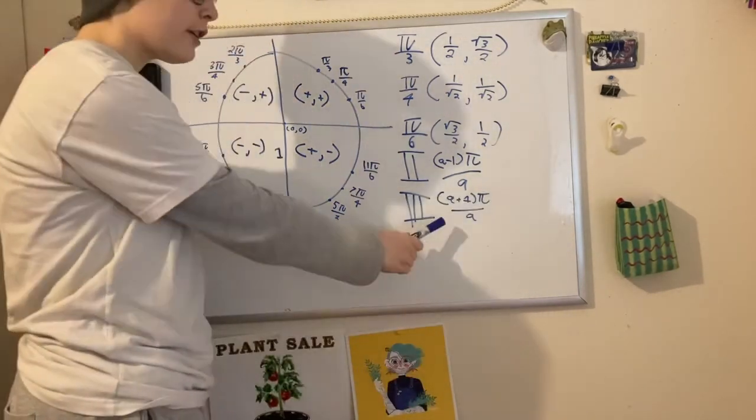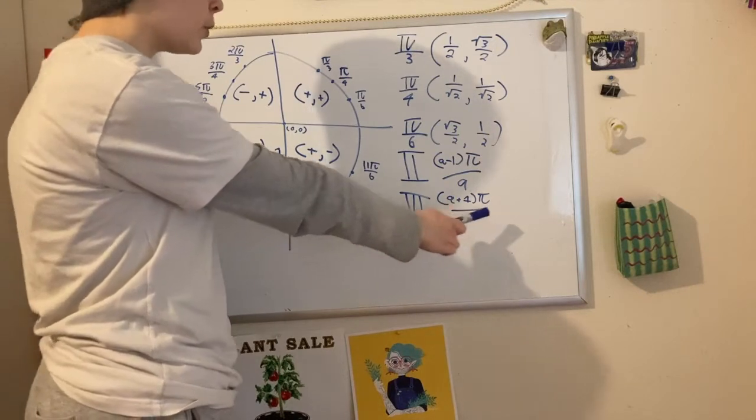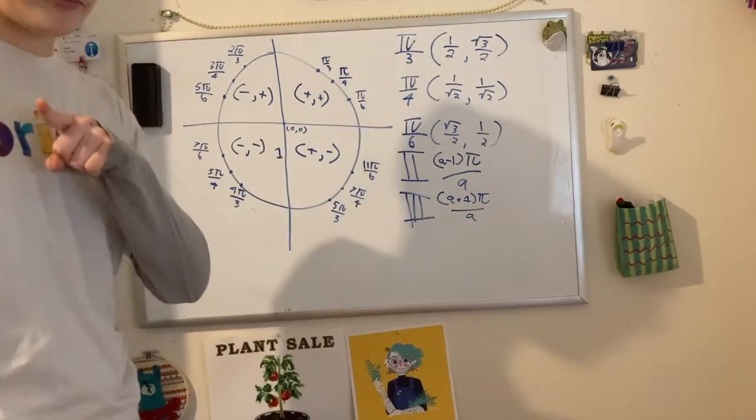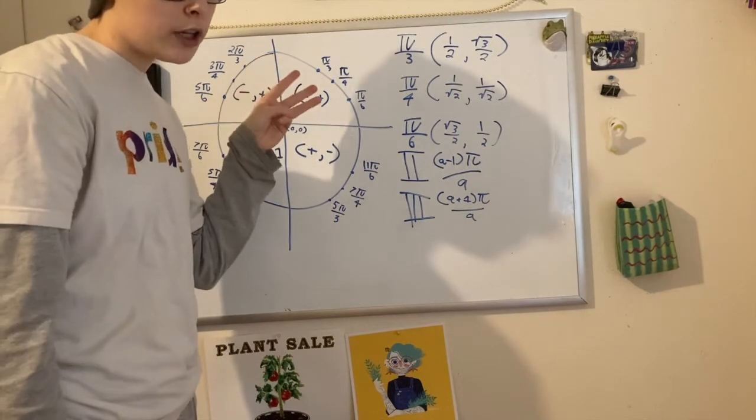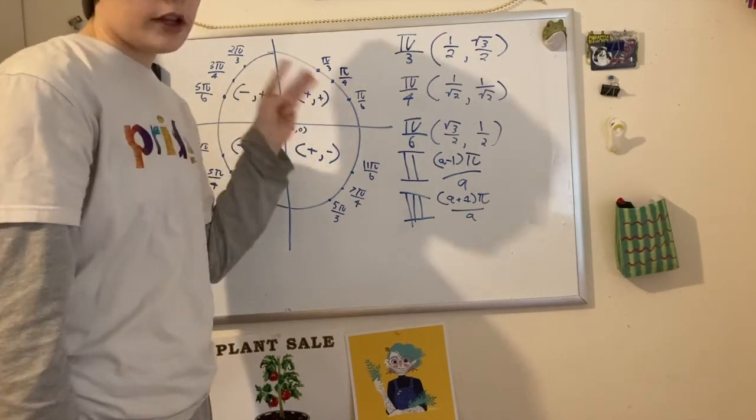The third quadrant, the numerator is going to be the denominator plus 1 times π. Now remember, these tricks I'm telling you only work with these three points. These are our key points. They are the really cool ones. That is what we're doing.